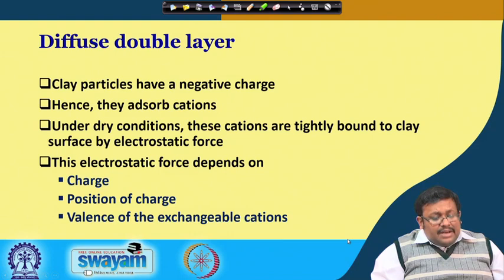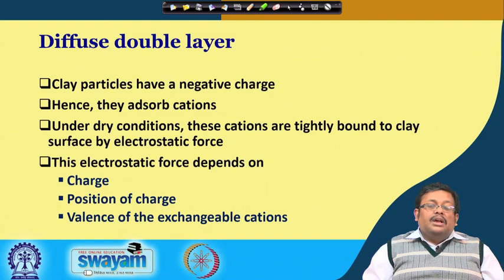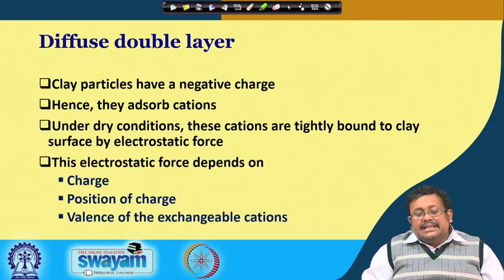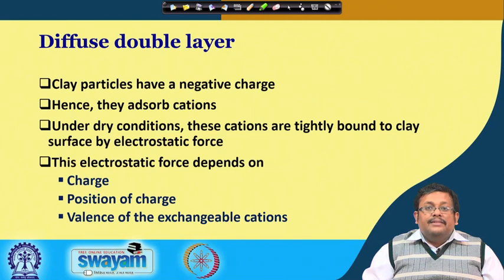Let us start with the diffuse double layer. All clay particles have negative charge, most of the time because of isomorphous substitution, and as a result they can adsorb cations. Under dry conditions, these cations are tightly bound to the clay surface by electrostatic force. This electrostatic force depends on the charge, position of charge, and valence of exchangeable cations — these three are important factors.